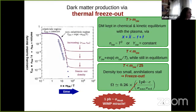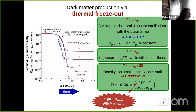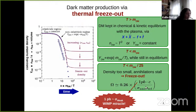The most well-studied and perhaps most generic production mechanism of dark matter is the so-called thermal freeze-out. The idea is that dark matter was in chemical and kinetic equilibrium in the early universe with the primordial plasma via fast pair-creation and annihilation processes. At some point the temperature dropped, dark matter became non-relativistic, the density became exponentially suppressed, dark matter particles could not find each other anymore, self-destruction stopped, and the dark matter density froze out.